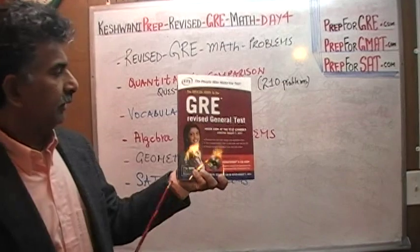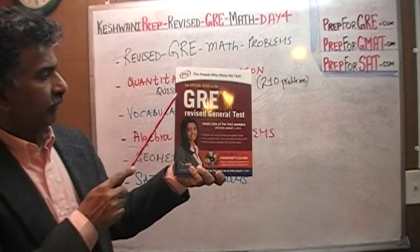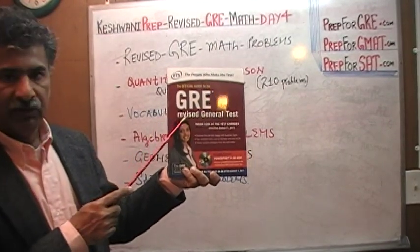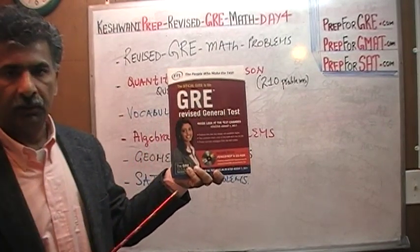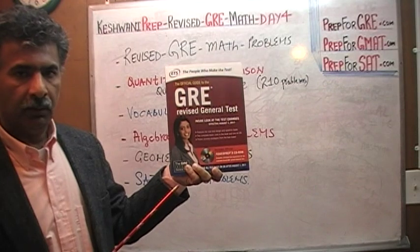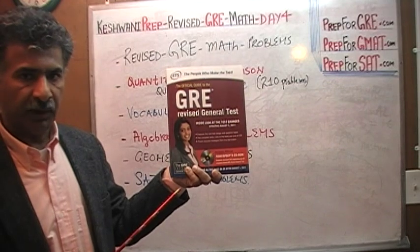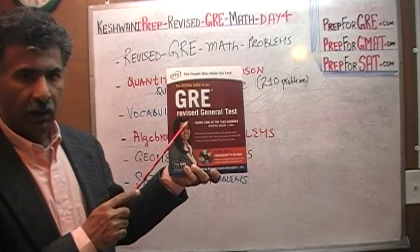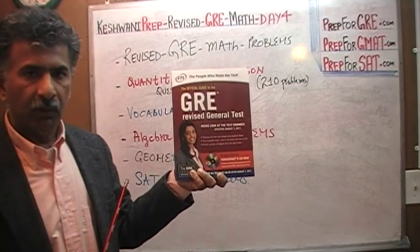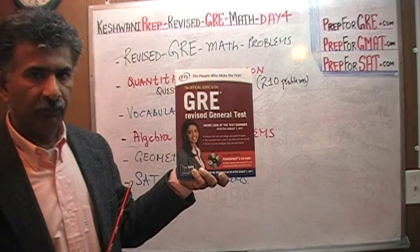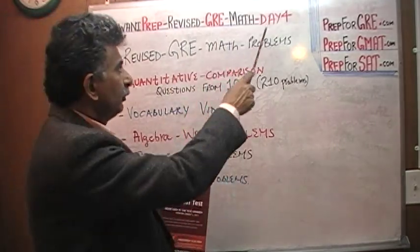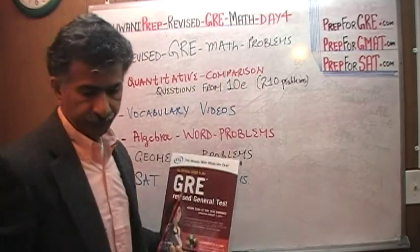The book I'm holding in my hand is called the Official Guide to the GRE Revised General Test. I have just begun doing math problems out of this book. My goal eventually is to do every single math problem out of this book — I have gone up to problem number four.